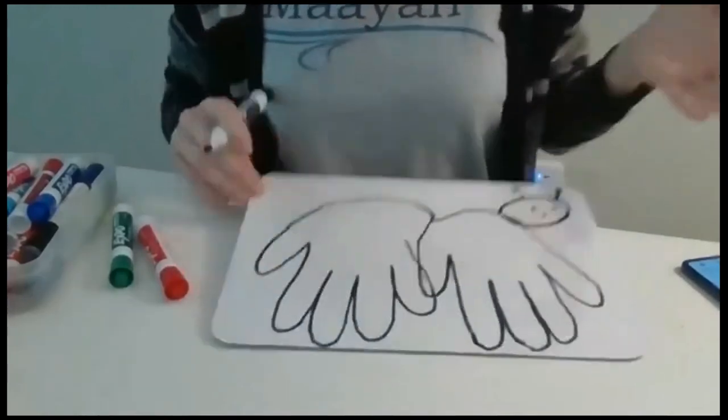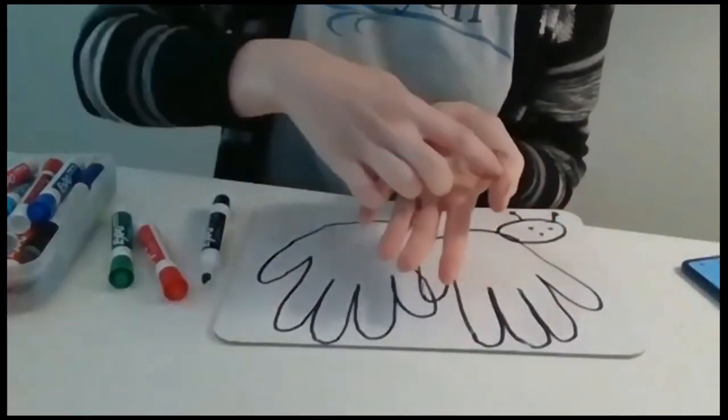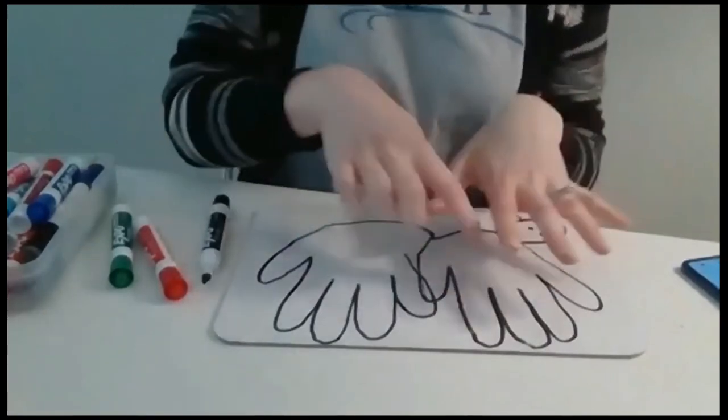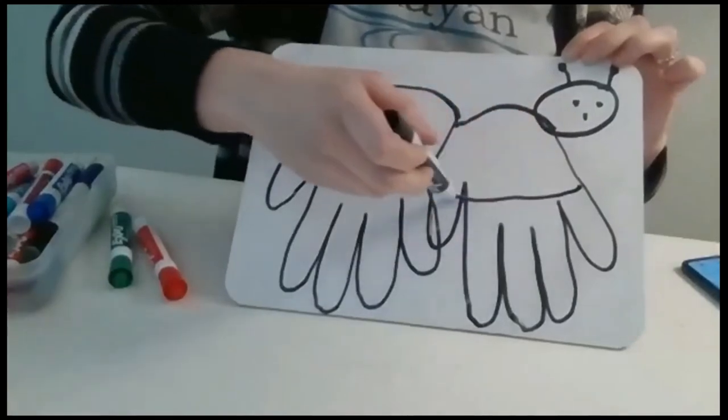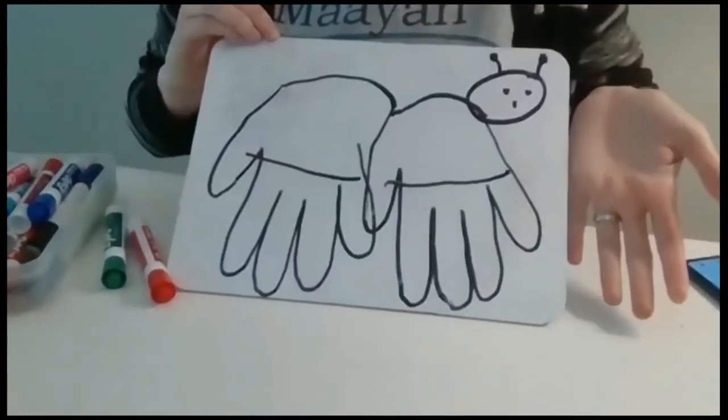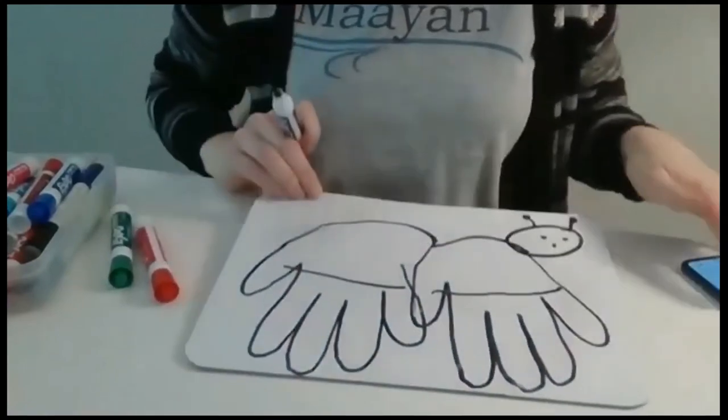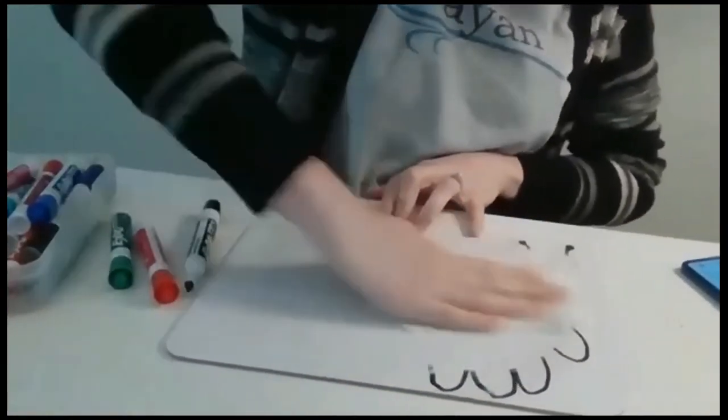So you could do half of your hand one color and then you could make a different color for your fingers because that would be the legs. So then you could do your fingers one color and then you could do this part on your hand a different color. That's if you do it messy. I have one more. So you could do it. There's so many things that you could make with your hand prints.